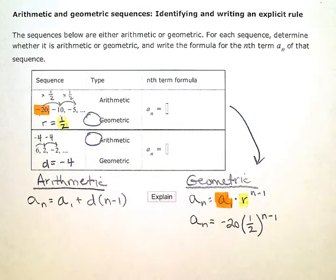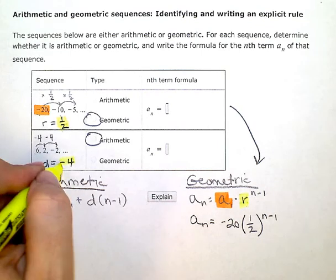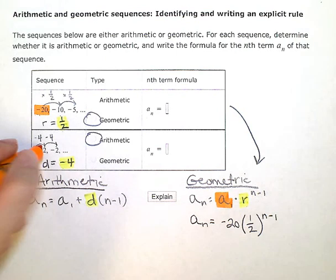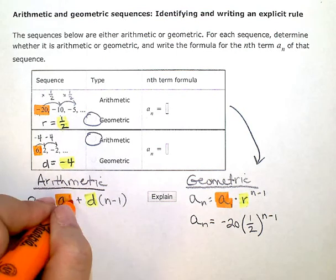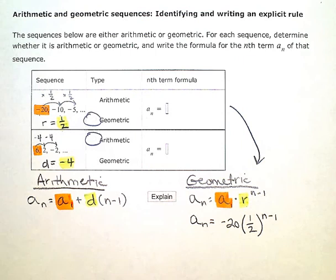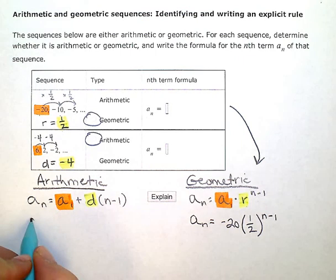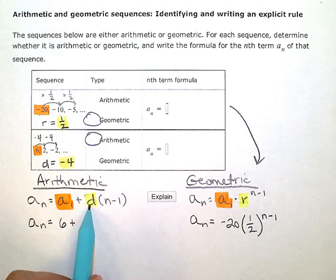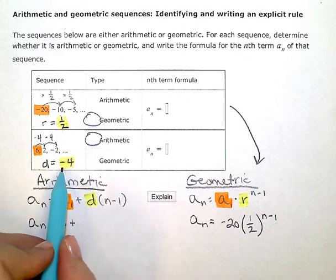Now I have the two pieces of information that I need. I'm going to put this negative 4 in place of d, the common difference, and I'm going to put the 6 in place of a_1 as the first term in my sequence. So my formula is going to be a_n equals—instead of a_1, I'm going to put 6. Instead of d, my common difference, I'm going to put negative 4.